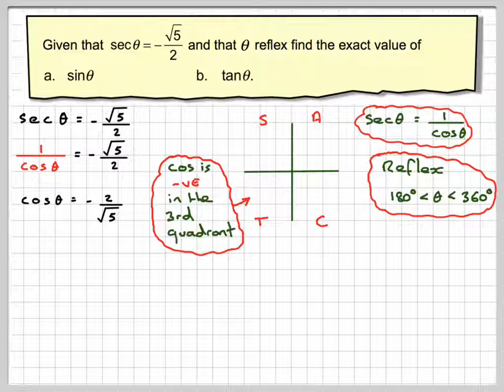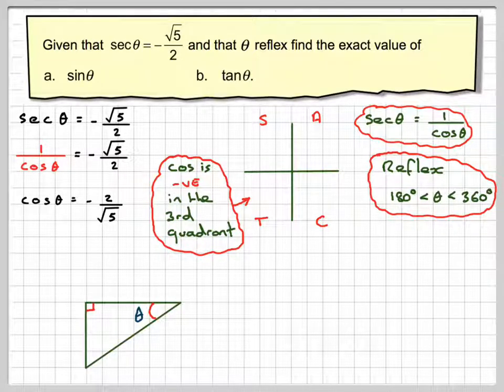So now, as opposed to using the Pythagorean identities, another way to do this is to draw a right-angled triangle, make this angle θ. Now, cos is adjacent over hypotenuse, so we'll make the adjacent side minus 2 and the hypotenuse root 5.